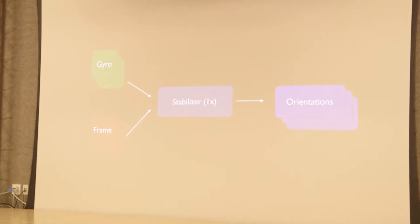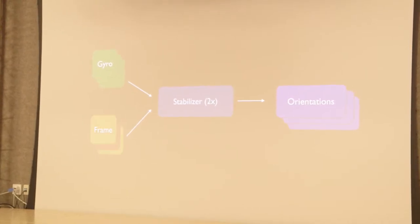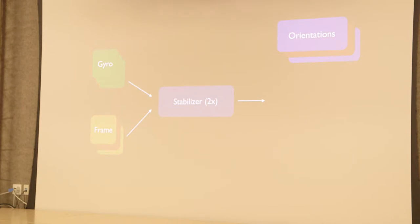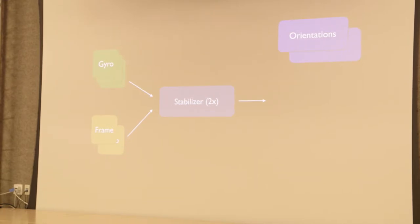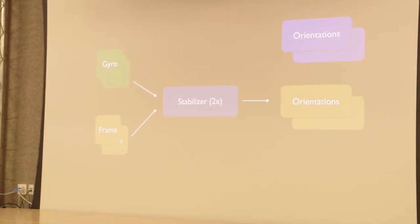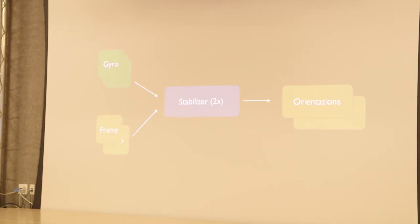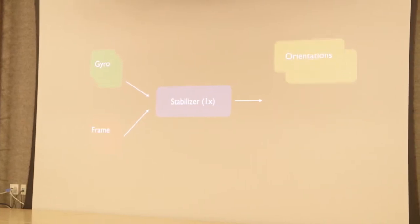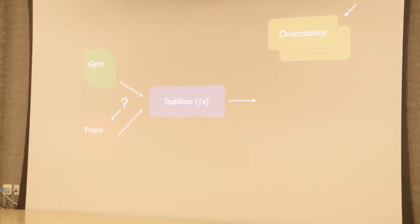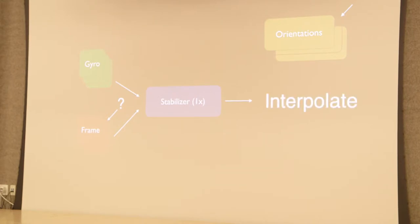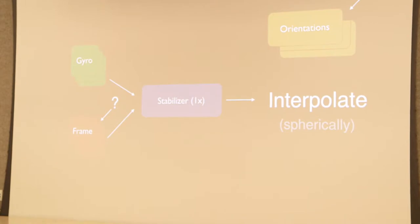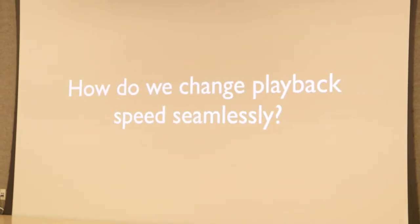Let's say we start at 1x — we've computed the orientations. Now you go from 1x to 2x. We display the yellow frames using the 1x orientations we already have. Meanwhile in the background, we kick off a stabilization pass to compute new stabilized orientations at 2x. Once those come in, we swap them out and play at 2x. Going in the opposite direction — back to 1x — we do the same thing, except for the intermediate frames we interpolate, and we interpolate spherically because we're dealing with rotations.